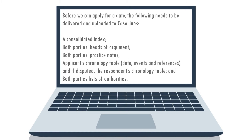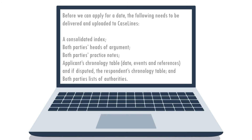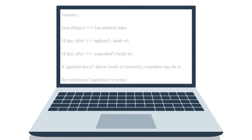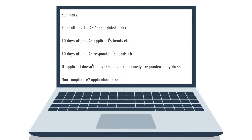We're almost ready to apply for an opposed motion date, but before we can do so, the following needs to be delivered and uploaded to CaseLines: a consolidated index, both parties' heads of arguments, both parties' practice notes, the applicant's chronology table — which is the dates, events, and references — and if disputed, the respondent's chronology table, and both parties' lists of authorities. Let me break the above down for you in more detail.